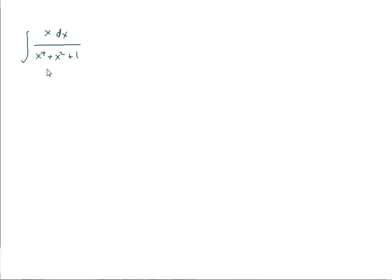Negative b plus or minus the square root of b squared minus 4ac is going to be negative 1 minus 4. So, partial fractions isn't the best approach because we can't factor the denominator.